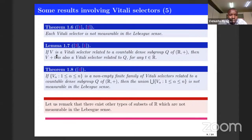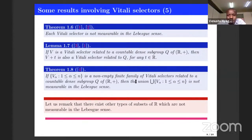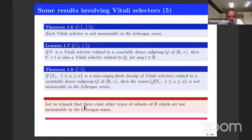The interesting research about Vitali selectors concerns unions of Vitali selectors. This theorem says that if each element in a family is a Vitali selector related to the subgroup Q — meaning Q is used to construct each set — then the union is not measurable in the Lebesgue sense. One can see the proof in this book. Here we have examples of sets which are not measurable in the Lebesgue sense, but in the literature you will find other kinds of non-measurable sets.